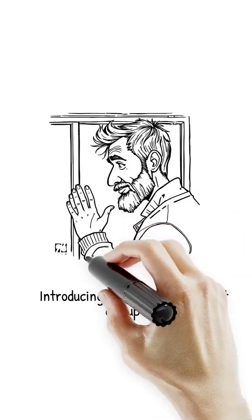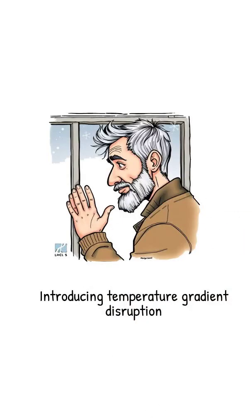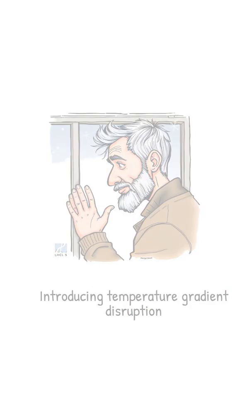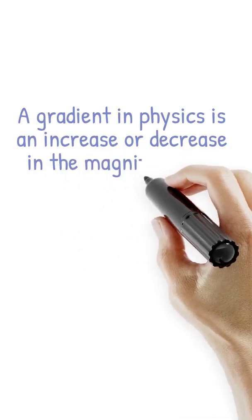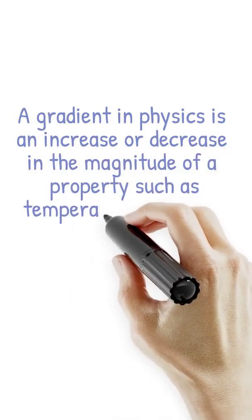Have you ever held your hand next to a window on a winter day, and it feels like a cold breeze is coming through the window? That is actually the heat from your hand moving toward the cold window, and that is an example of a temperature gradient.